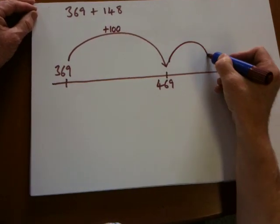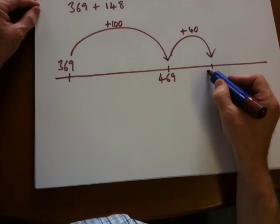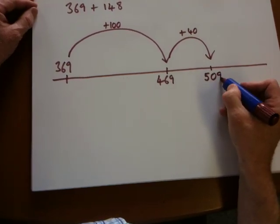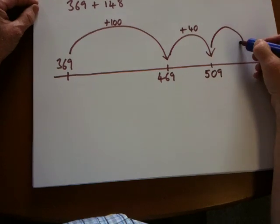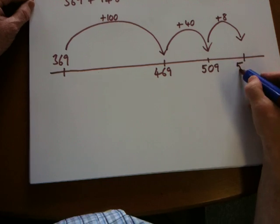Now, we could add 40. That'll get me to 509. And now, I've still got to add 8. That will get me to 517.